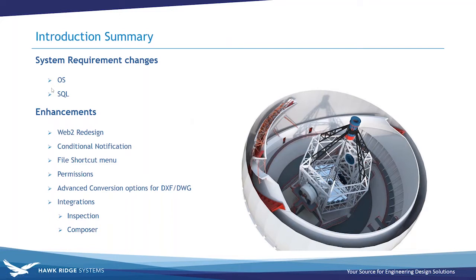Let's give you a summary of this session. First off, we're going to talk about the system requirements changes — basically operating system, SQL, what to look for when you upgrade to 2019, and what's coming as end of life. Then we'll follow with the list of enhancements that 2019 offers. There's not a big shining feature this year like in 2018 with branch and merge or the revision table integration.